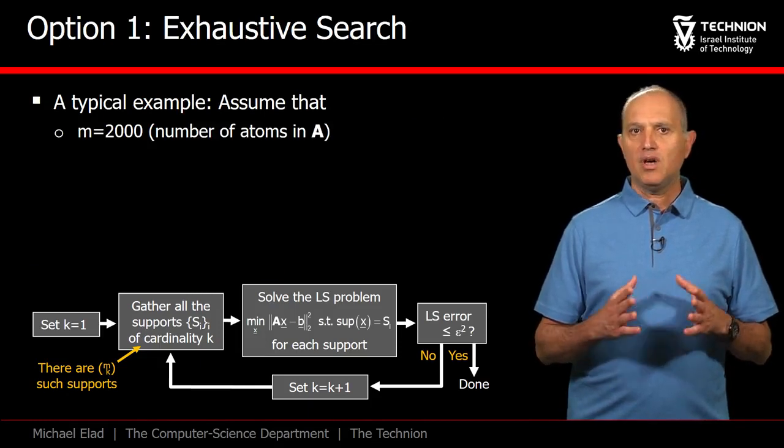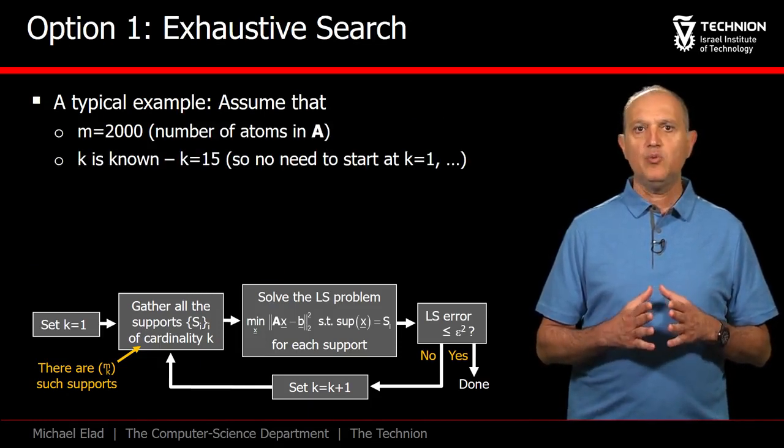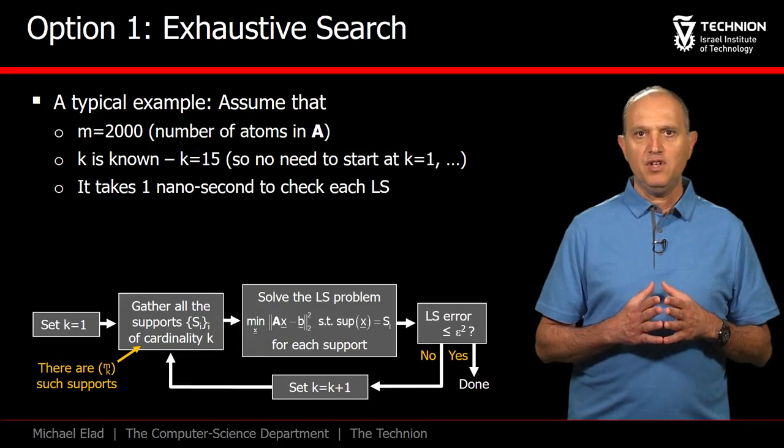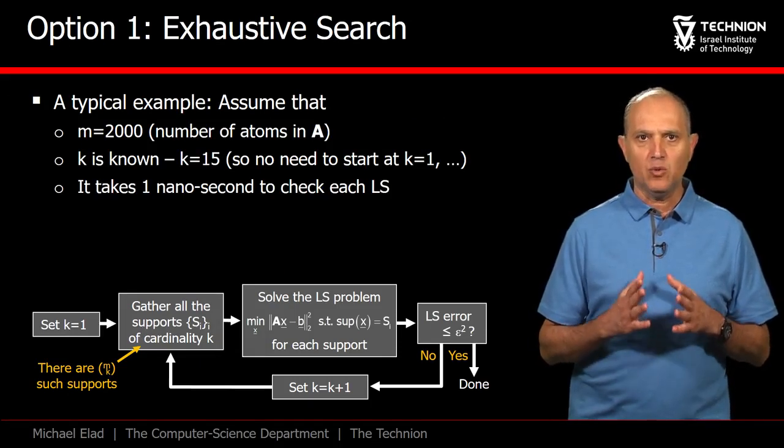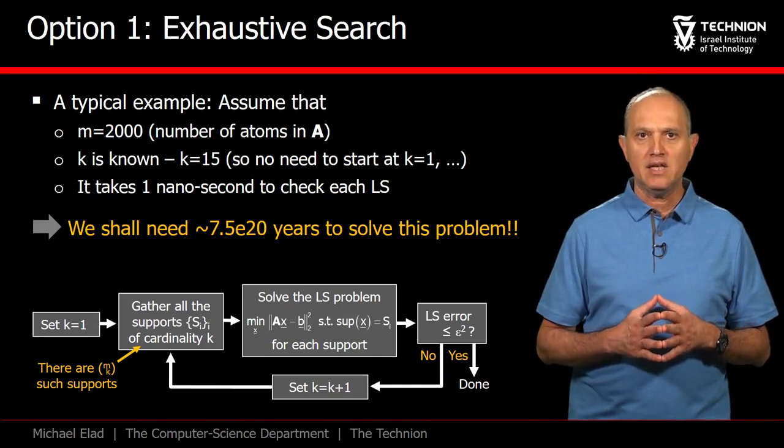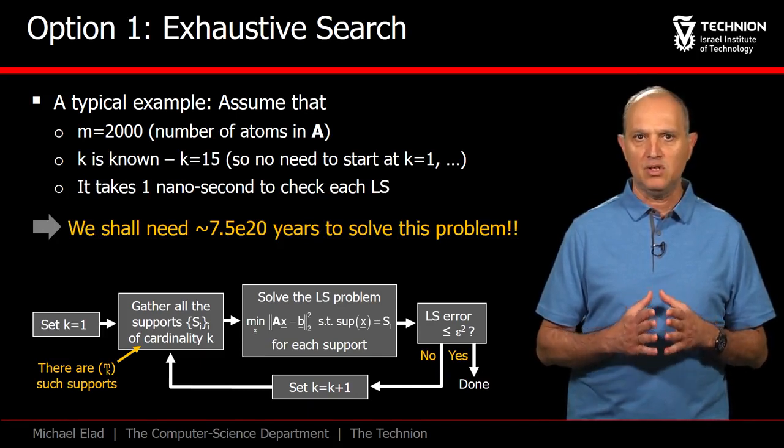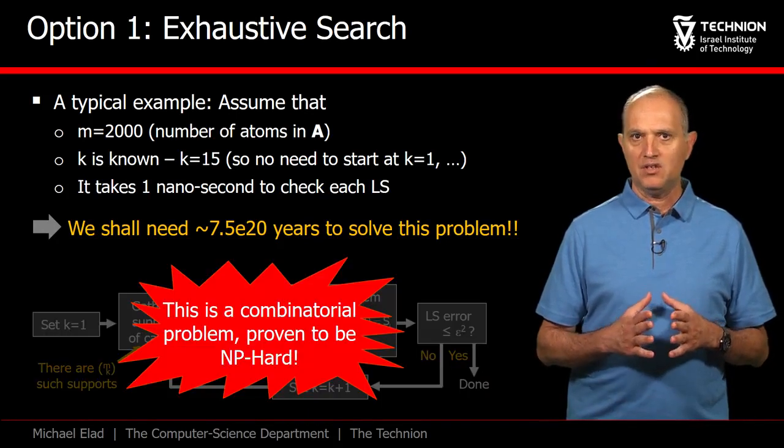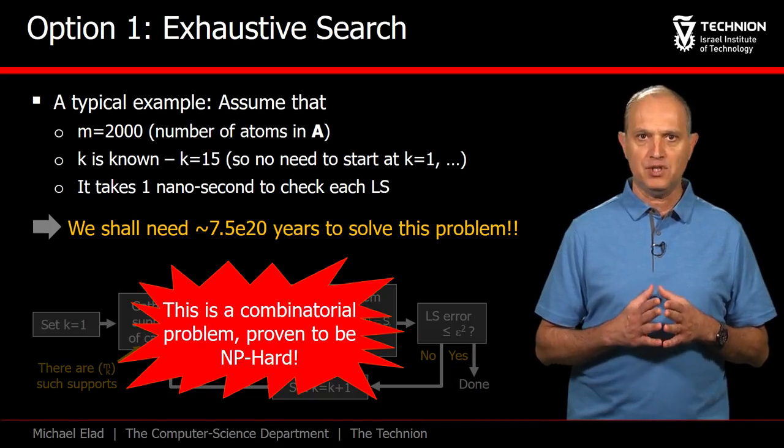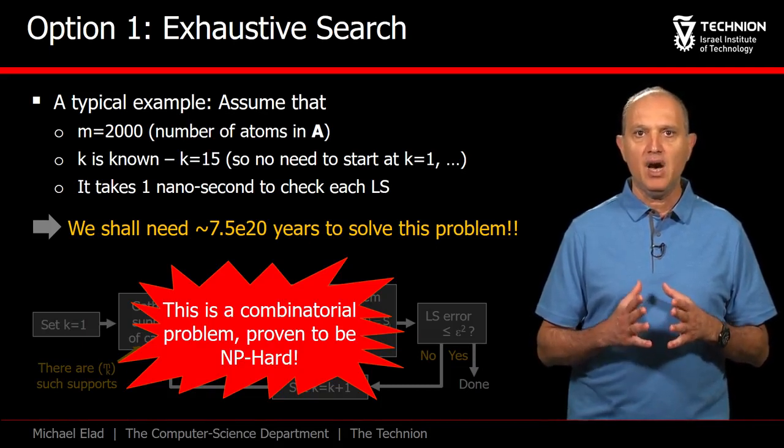Assuming that A has 2,000 columns and k is known to be 15, if each of these tests would require 1 nanosecond to complete, we will need millions and millions of years to conclude this pursuit. We are looking at a tough problem of combinatorial nature. And in fact, it is known to be NP-hard.